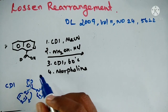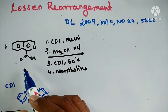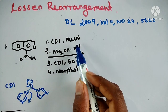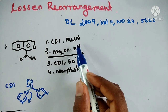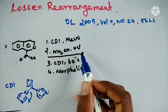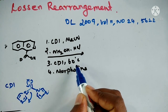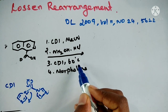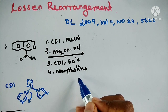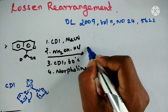Let's discuss this example. An acid in the presence of CDI in acetonitrile. The next step is hydroxylamine hydrochloride. Again, CDI at 60 degrees centigrade. The final step is reaction with morpholine. What is the product? Just pause the video and try to write the answer.